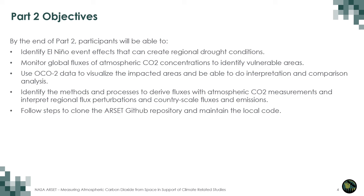The objectives of this session are for participants to identify effects from El Niño that can create regional drought conditions, monitor global fluxes of atmospheric CO2 concentrations to identify vulnerable areas, use OCO2 data to visualize impacted areas and do interpretive and comparative analysis using Jupyter Notebook, and identify methods and processes to derive fluxes with atmospheric CO2 measurements. Participants will also interpret regional flux perturbations and country-scale fluxes and emissions.